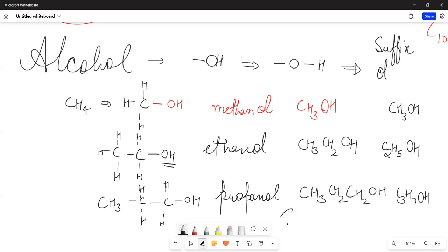If we are going to write the general formula, the general formula is CnH2n+1OH. Again, what is the gap between these two? CH2. What is the gap between two consecutive members? CH2.